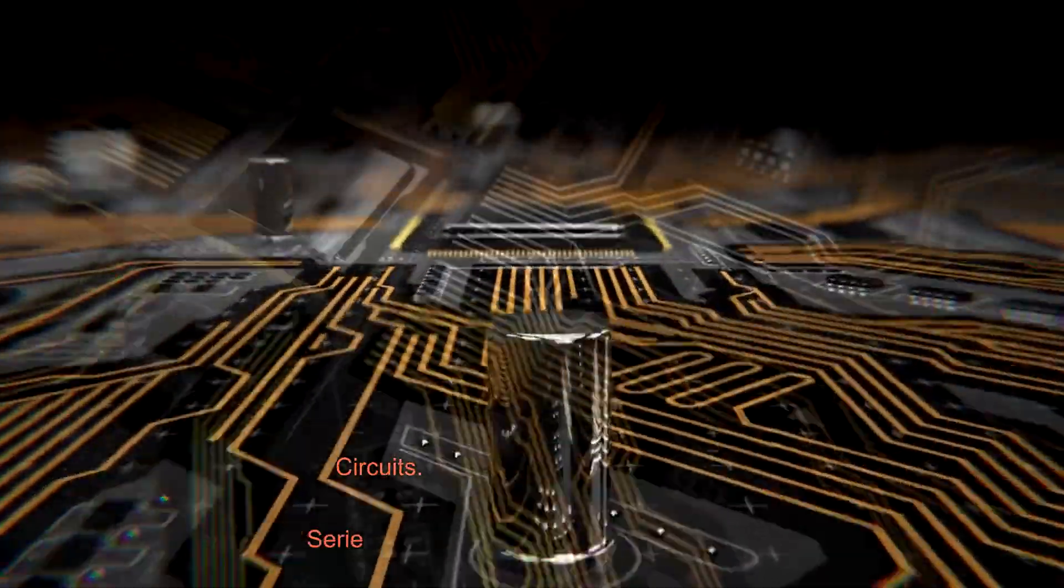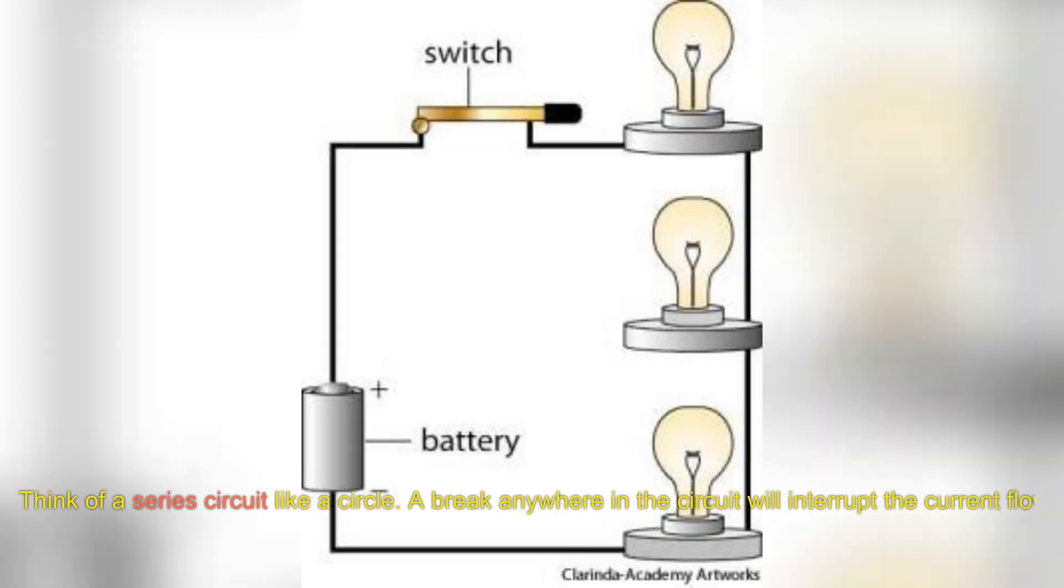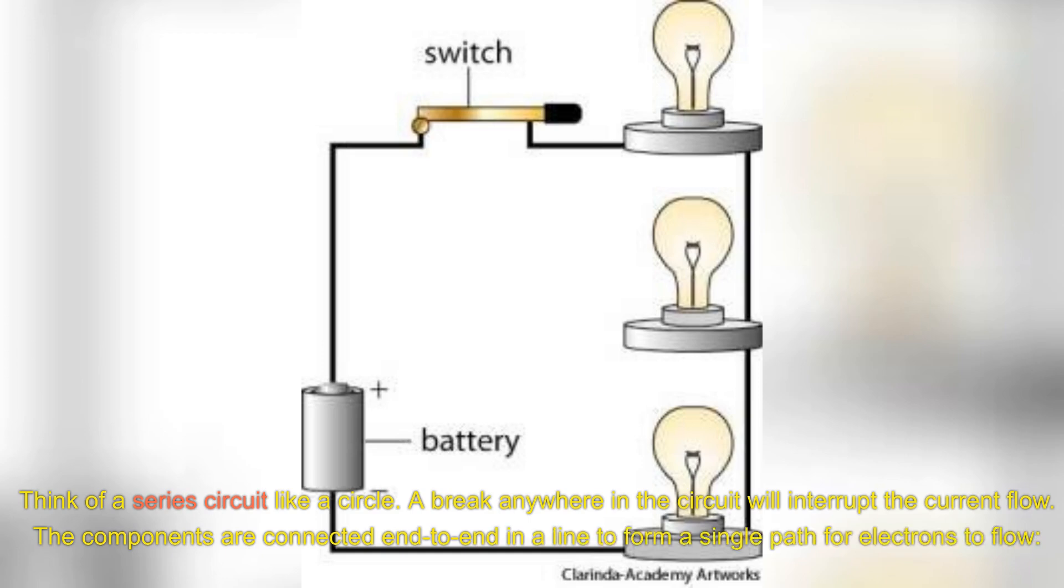Circuits. Series circuit. Think of a series circuit like a circle. A break anywhere in the circuit will interrupt the current flow. The components are connected end-to-end in a line to form a single path for electrons to flow.